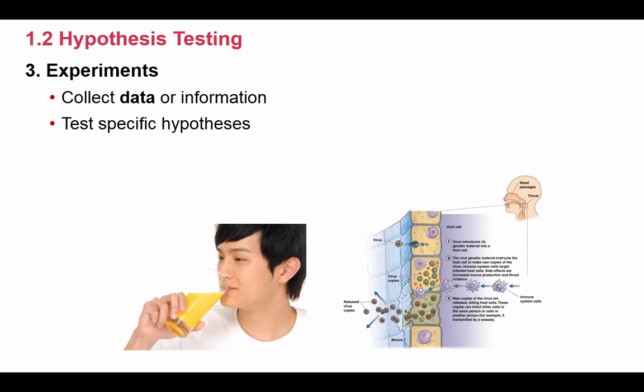In the previous section, we began looking at the scientific method by focusing on the first two steps of the scientific method. If you remember, we talked about making observations and then forming a hypothesis. So in this second section of chapter one, we're going to look at the third and fourth steps of the scientific method, which would be actually doing the experiment and then finally forming the conclusion.